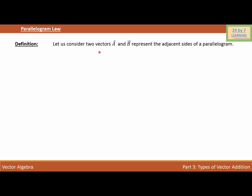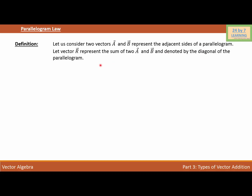Parallelogram law. Let us consider two vectors A and B representing the adjacent sides of the parallelogram. Let vector R represent the sum of vectors A and B, denoted by the diagonal of the parallelogram.